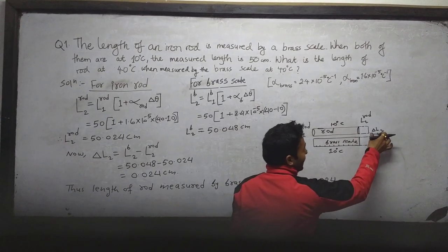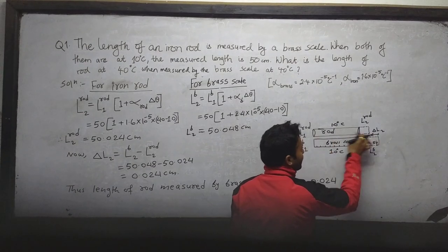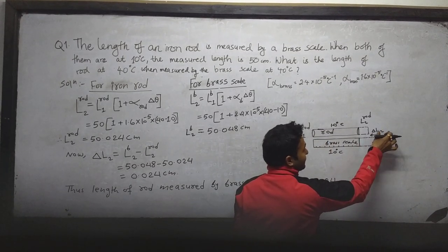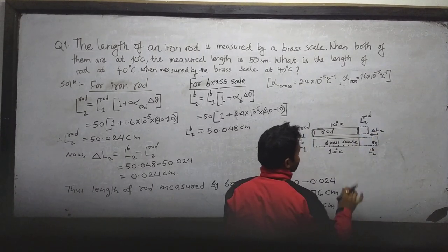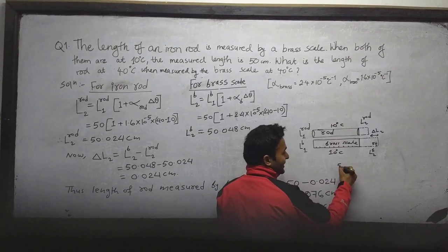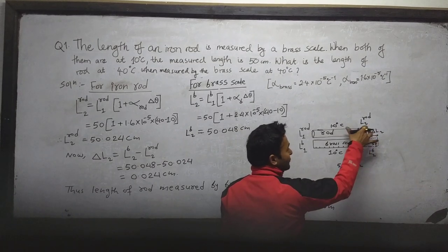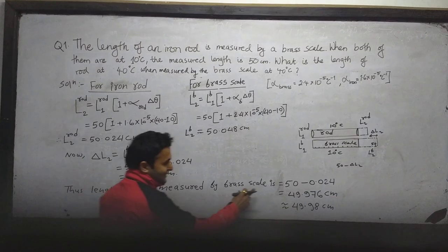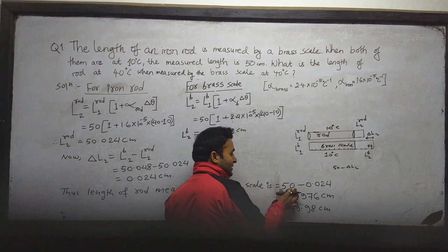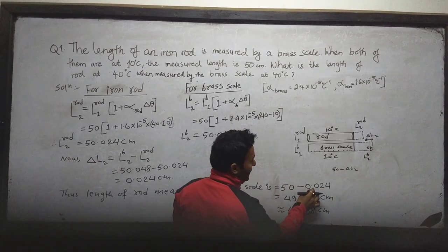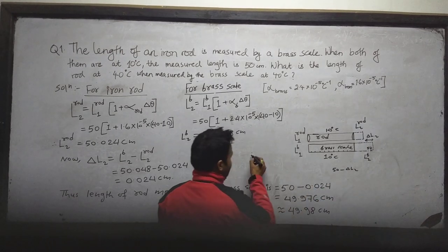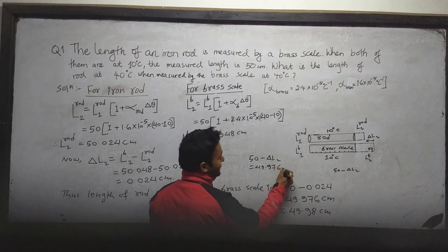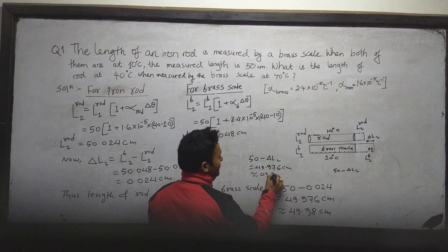We must subtract the value of ΔL2 from the scale length — that is, the length of the brass scale at 40 degrees centigrade. Since the brass scale expands more, it is a smaller reading than the actual rod length. So the measured length is 50 cm minus ΔL2, which equals 50 minus 0.024 = 49.976 cm, approximately 49.98 cm.